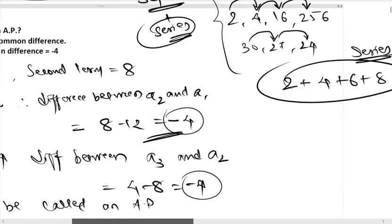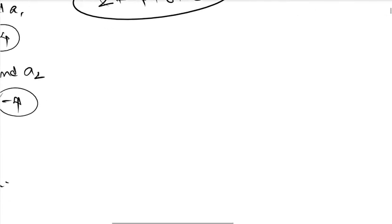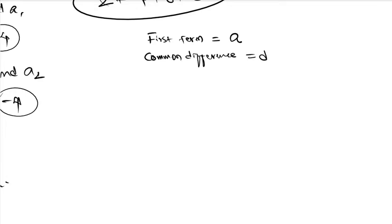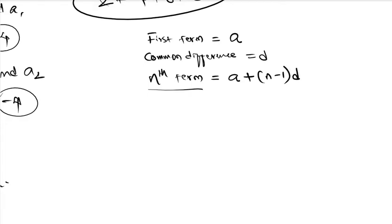Let's look at some symbols and formulae. The symbol for the first term is A. The symbol for common difference is D. The nth term — which means any arbitrary term in the AP — has the formula: A plus (N minus 1) into D. If we apply this formula for the first term, where N equals 1, we get A plus 0 times D, which is A.